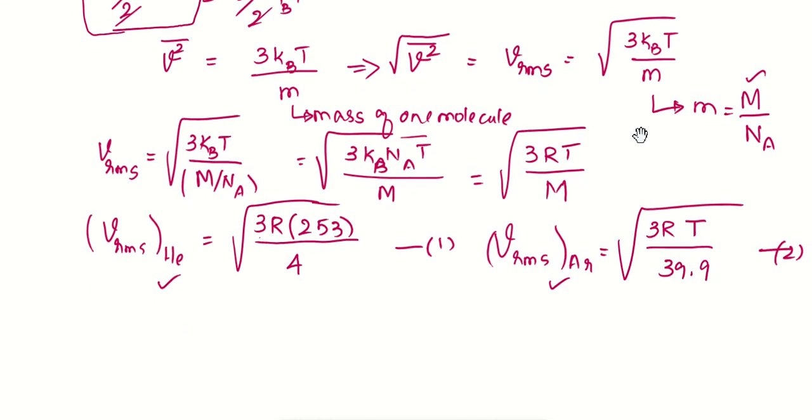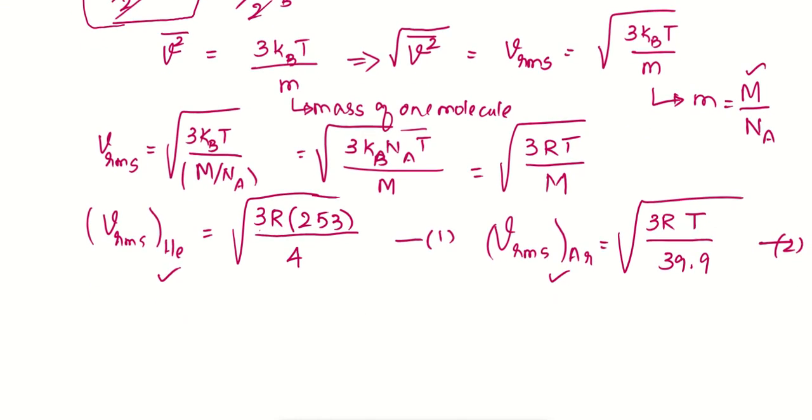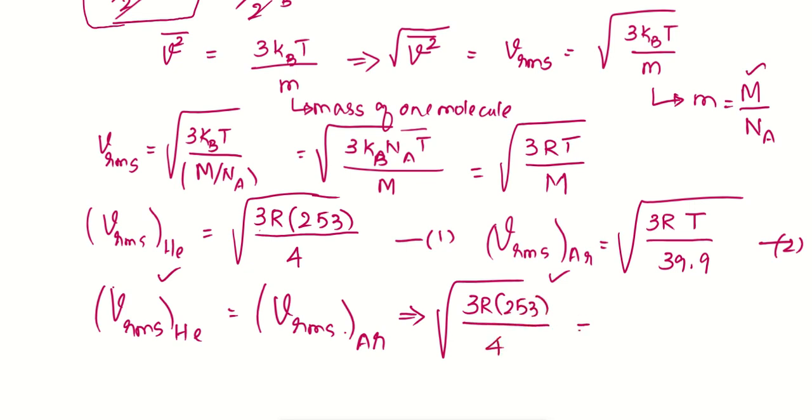VRMS of helium equals VRMS of argon. We are going to equate equations 1 and 2. So you will have square root of 3R times 253 divided by 4 equals square root of 3RT divided by 39.9. The square roots will go away.